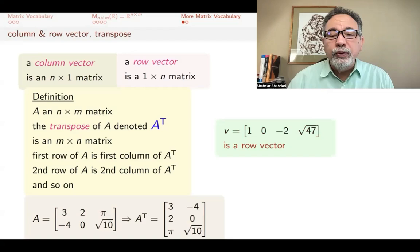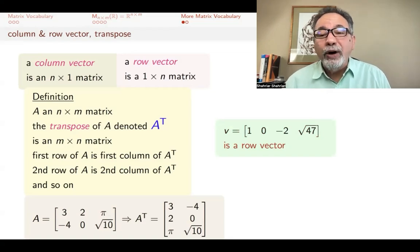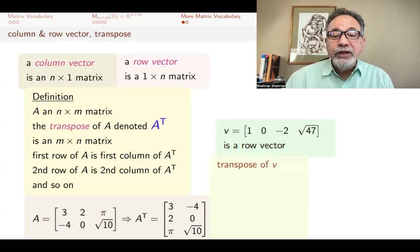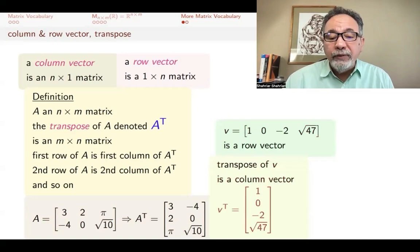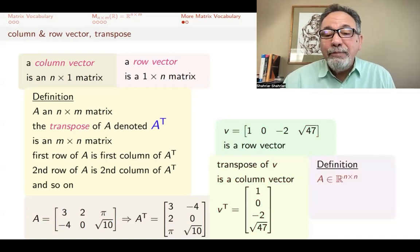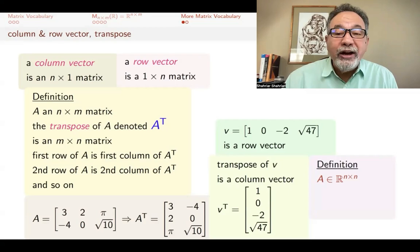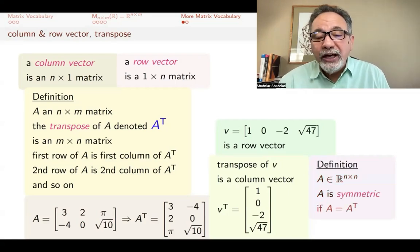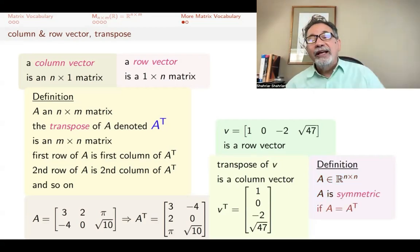Here's a row vector with four entries. So this is a one by four matrix. And if you take its transpose, then you get a column vector. If you have an n by n matrix, a square matrix, then you call it symmetric if after you transpose it, nothing changes.